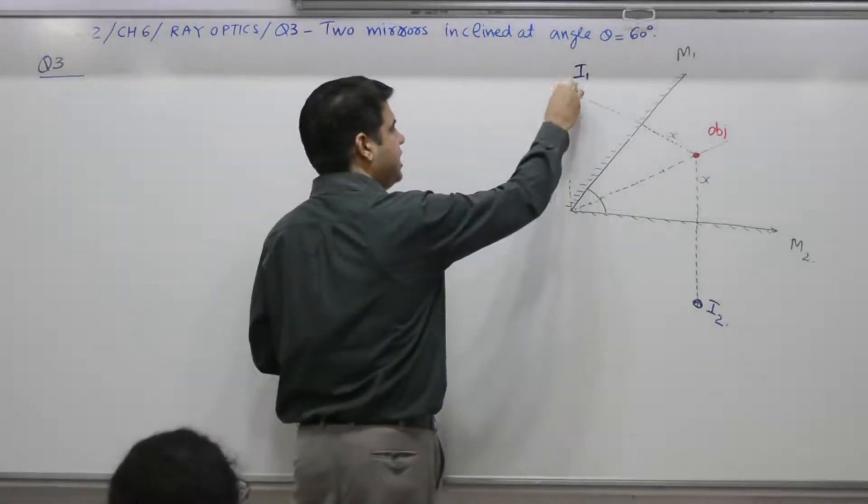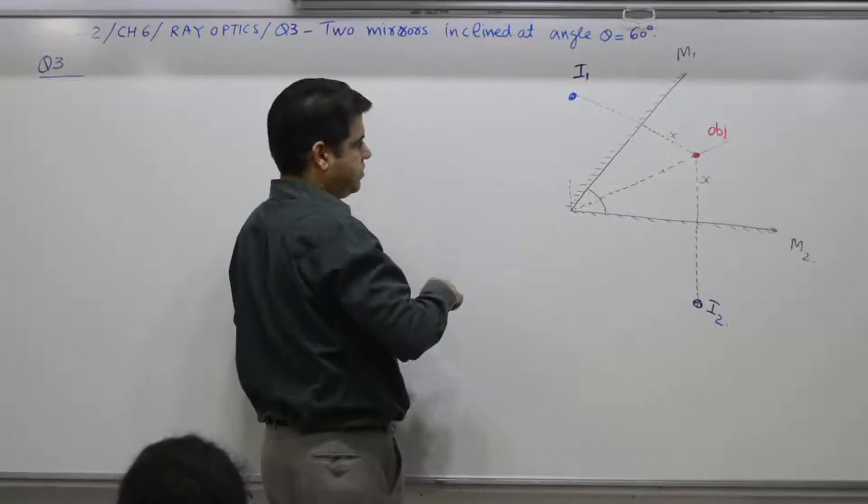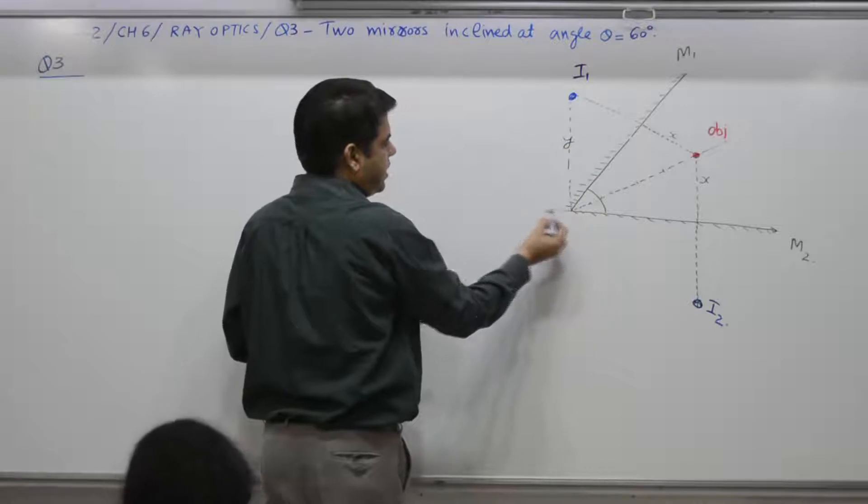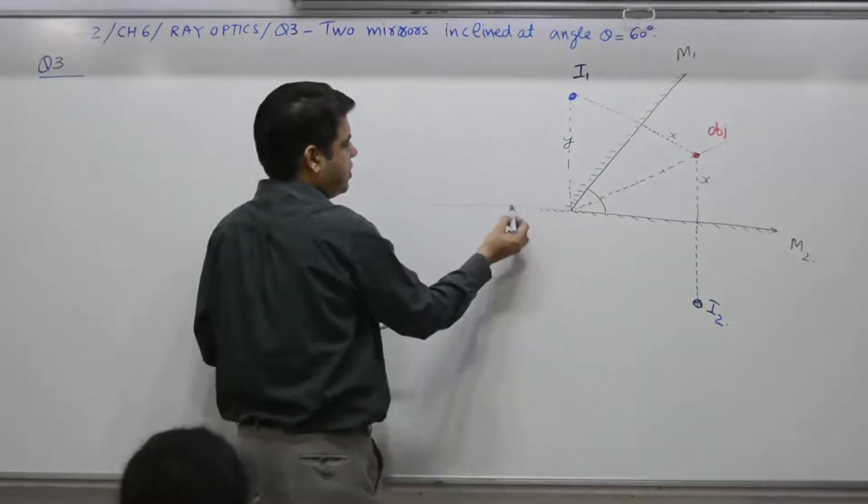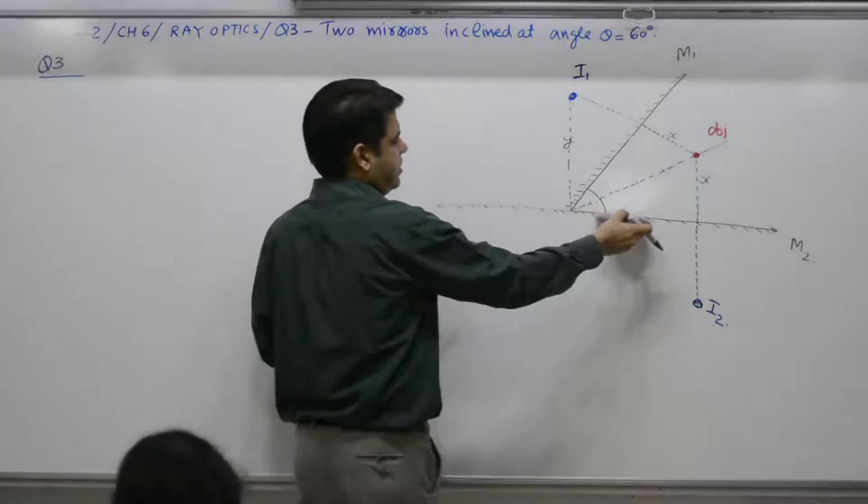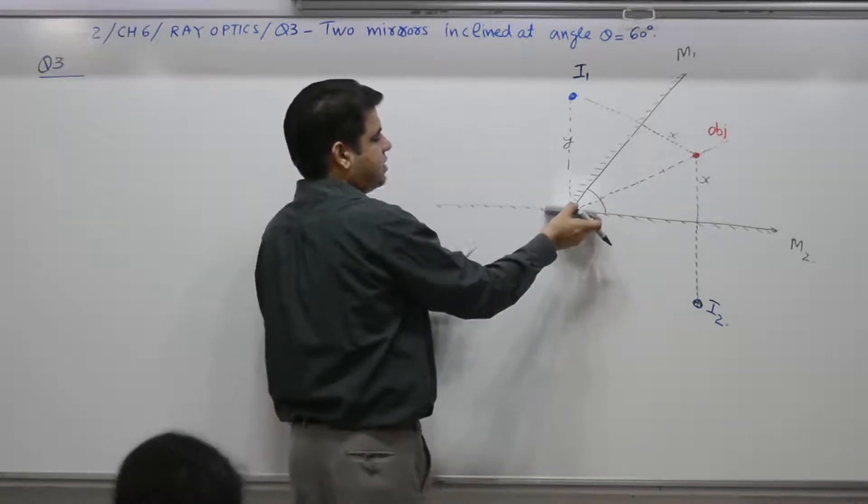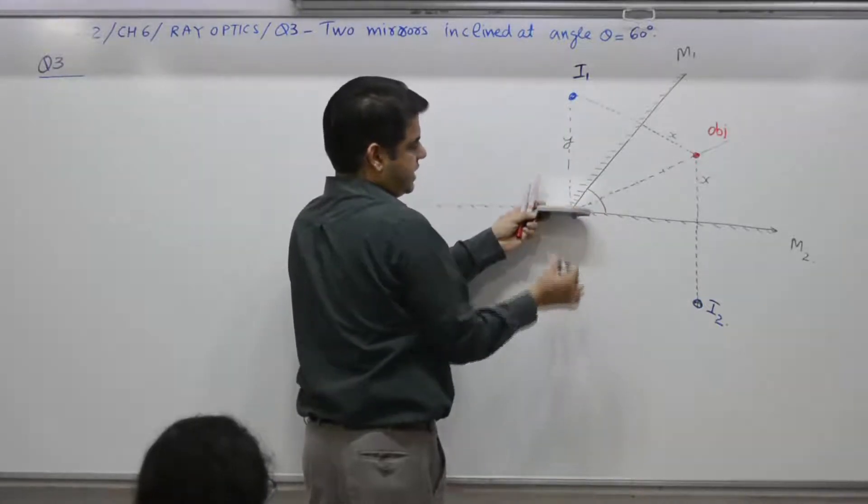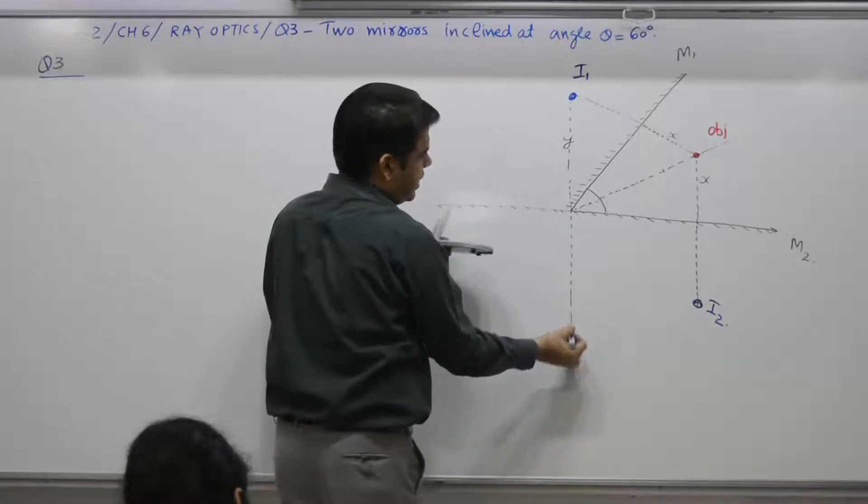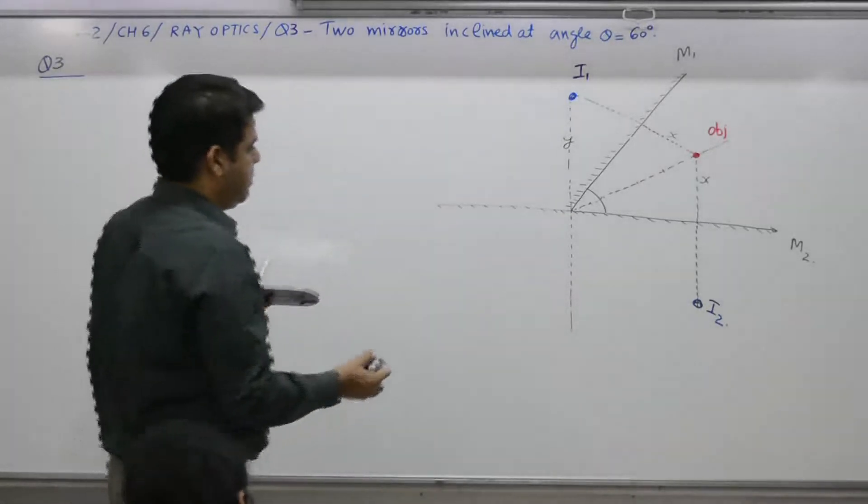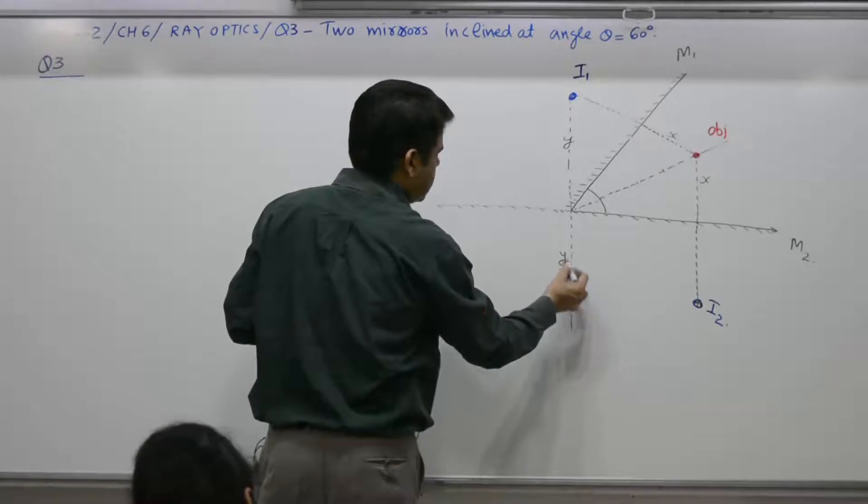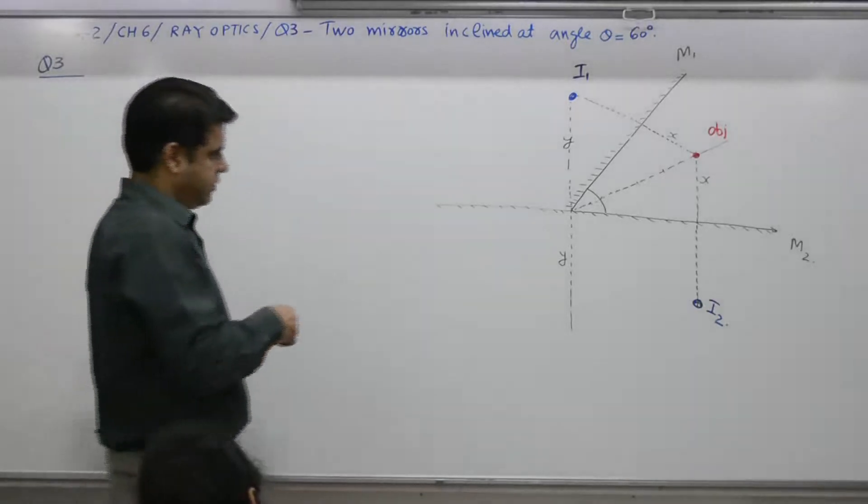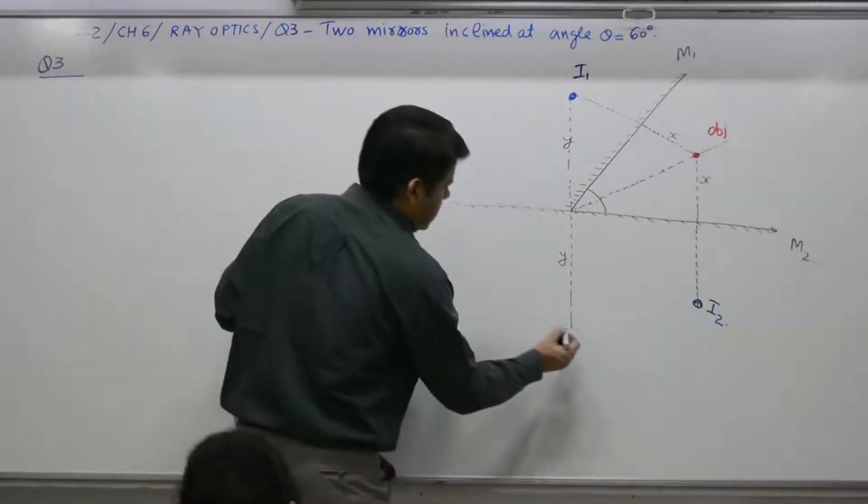Image of I1. Treat I1 as object. It is at certain distance, say Y, from this mirror. Extend this mirror to infinity like this. This is the mirror. You extend it. This is the mirror. Now, this is the mirror. Where is its image? Yes. Exactly backside, same distance. So this distance is also Y. Yes. Let me call this as I1 dash. This image is I1 dash.